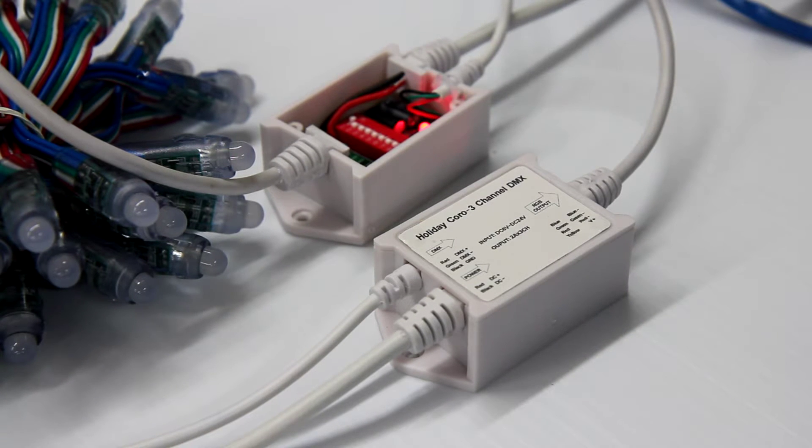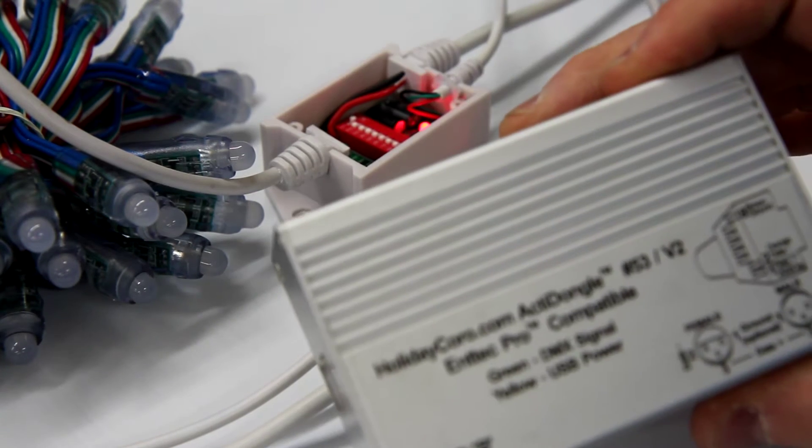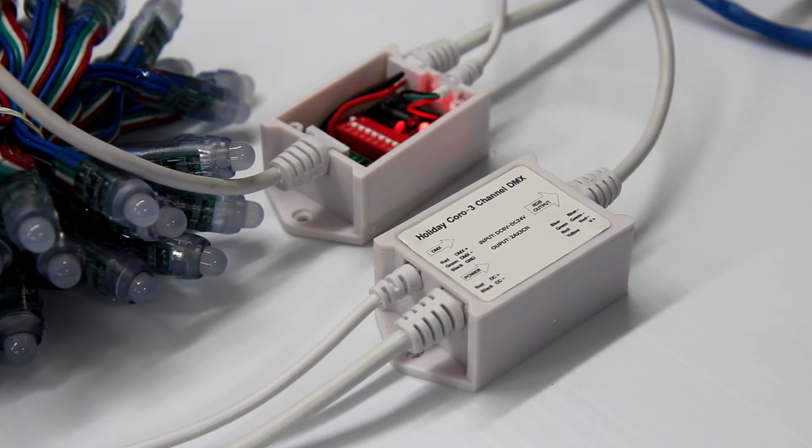This is HolidayCore item number 27, 3-channel DMX DUMM controller. This RGB DUMM controller is designed for RS-45 DMX input and can be driven by a variety of devices, including our Acta dongle or one of our E-131 pixel controllers.